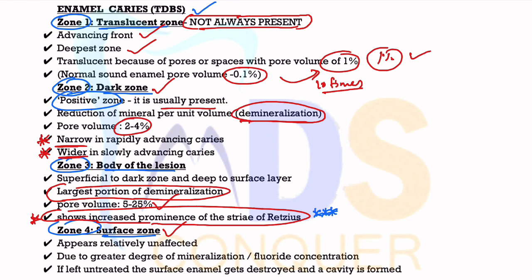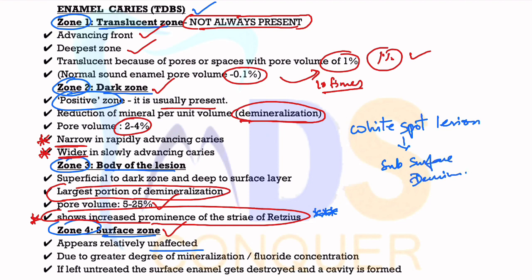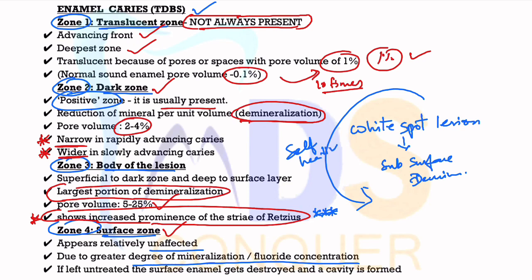The last zone is called the Surface Zone, which is the outermost zone. It appears relatively unaffected. In cases of subsurface demineralization — you may remember the clinical term white spot lesion — the surface is intact but there is demineralization subsurface. Sometimes the surface may be unaffected in some types of subsurface demineralization. Due to greater degree of mineralization and fluoride concentration, most of these lesions can be self-healed.